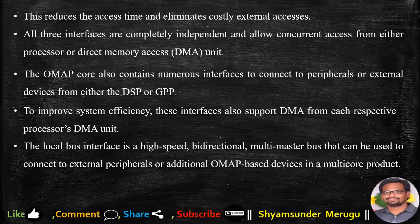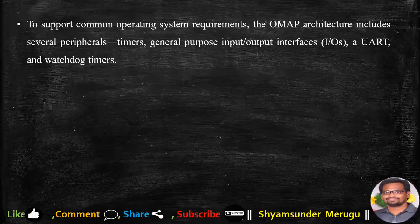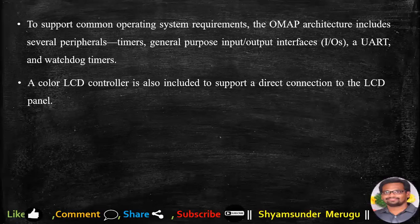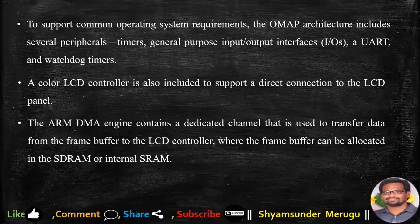The local bus interface is a high-speed, bi-directional, multi-master bus that can be used to connect to external peripherals or additional OMAP-based devices in a multi-core product. To support common operating system requirements, the OMAP architecture includes several peripherals like timers, general purpose input-output interfaces, UART, and watchdog timers. A color LCD controller is also included to support direct connection to the LCD panel. The ARM DMA engine contains a dedicated channel used to transfer data from the frame buffer to the LCD controller, where the frame buffer can be allocated in SDRAM or internal SRAM.